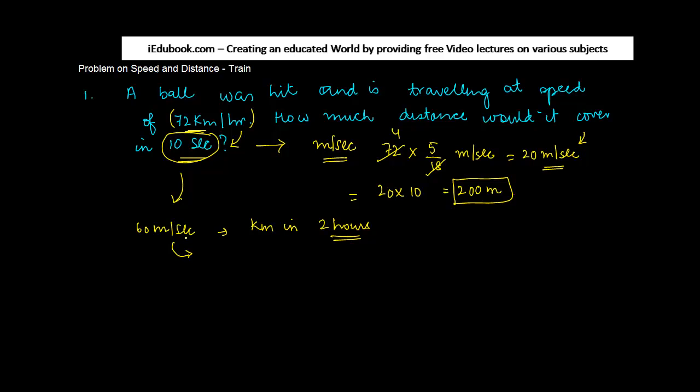So if it is 60 meter per second this means you have to convert it into km per hour. So for that you multiply 60 by 18 by 5. 5 goes into 60 twelve times. 12 times 18 will give you 180 plus 36, which is 216 km per hour. So the ball travels 216 km in 1 hour. So in 2 hours it will travel 216 into 2 or 432 km.